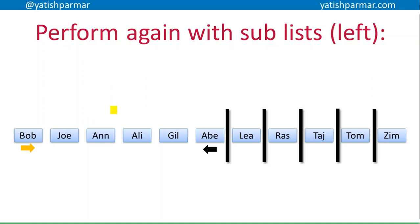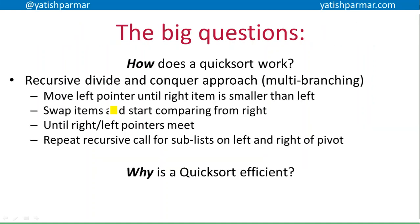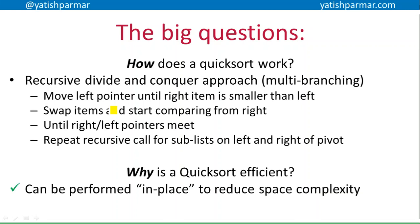So how does a quick sort work? It's a recursive divide-and-conquer approach making use of multi-branching. We move the left pointer along until the right item is smaller than the left and swap them, then compare from the right, swap again, and keep going until the left and right pointers meet — then repeat the recursive call for each partition on either side of the pivot. It's efficient because using the in-place technique I'm not creating new copies of the list for each partition on every recursive call, so space complexity is reduced and the algorithm is more efficient. The next video will give you an algorithm on quick sort.